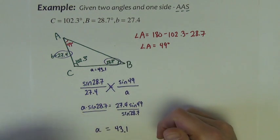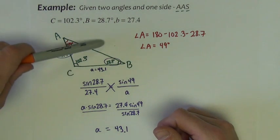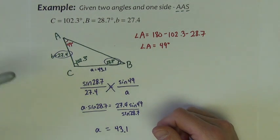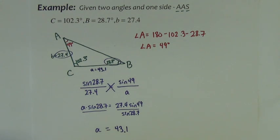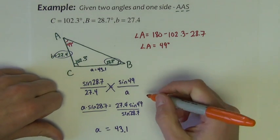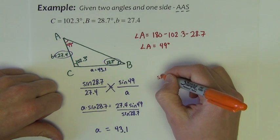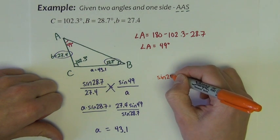Okay, now on to side c. I'll say this. Do not use Pythagorean's Theorem. This is not a right triangle, so don't think you can just do a squared plus b squared equals c squared. Instead, we'll set up another law of sines. We'll say the sine, I'm going to use B's again, 28.7 divided by 27.4 equals sine of angle C divided by side c.